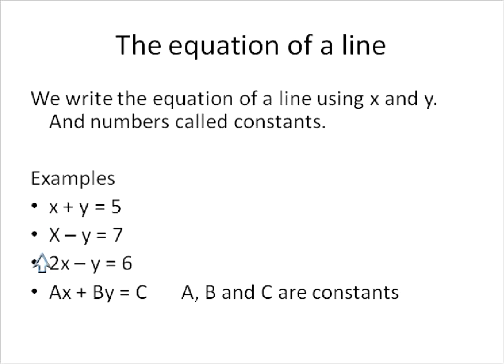In this first equation, we would say A is equal to 1, 1 times x plus B times y, and B would also be equal to 1. So we don't write down that we have any numbers in front. And C in the first one would be equal to 5. So that's the idea of writing an equation of a line in standard form: a number times x plus a number times y is equal to another number.